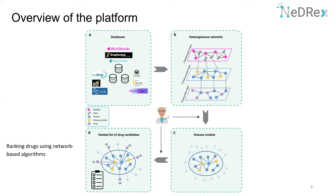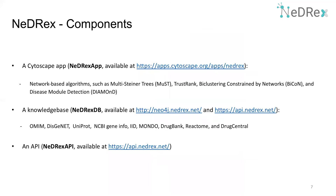An advantage of our platform is that users can engage their expert knowledge at two points where seeds need to be selected. The NeTrex platform has three main components: a knowledge base, a Cytoscape app, and an API. The NeTrex app provides implementations of network-based algorithms such as Multisteiner Trees, TrustRank, BiCoN, and Diamond. The knowledge base, named NeTrexDB, integrates data from various biomedical databases including OMIM, DrugBank, and UniProt. These networks can be accessed and explored by the NeTrex app, the NeTrex API, and the Neo4j endpoint to NeTrexDB.